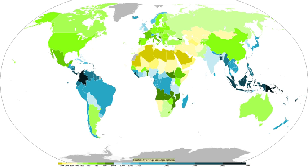Precipitation occurs when a portion of the atmosphere becomes saturated with water vapor, so that the water condenses and precipitates. Fog and mist are not precipitation but suspensions, because the water vapor does not condense sufficiently to precipitate.